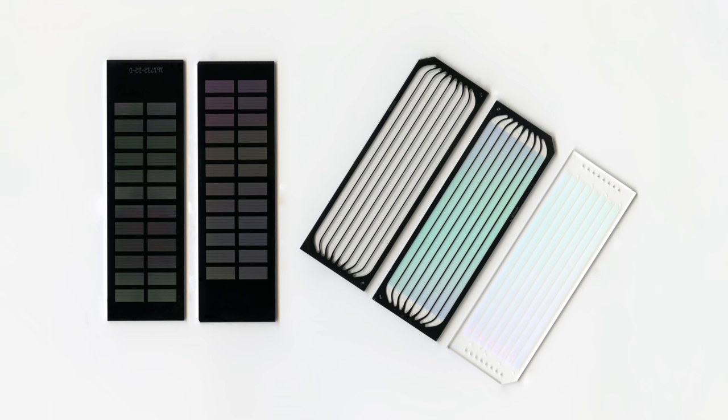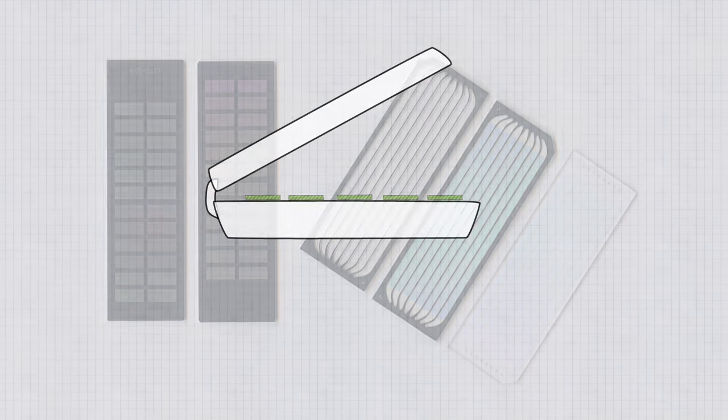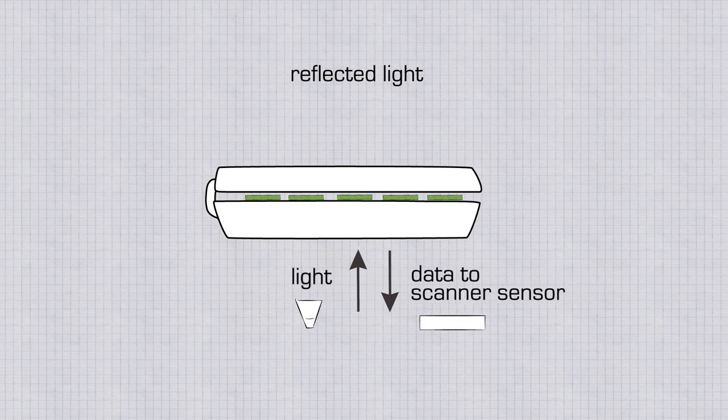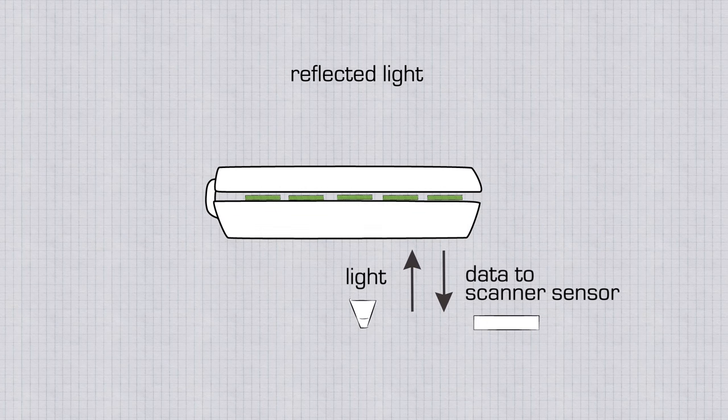To remind you, this is with reflected light coming from below the glass. The light bounces off the device and is read by the sensor below again. Pretty standard setting on your flatbed scanner as if you were scanning a document.